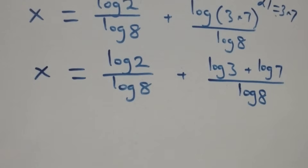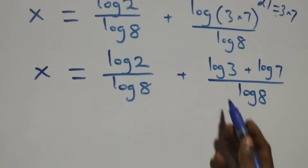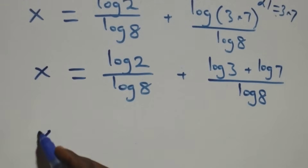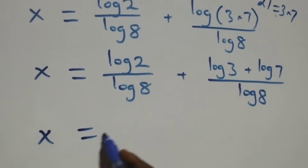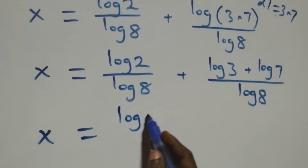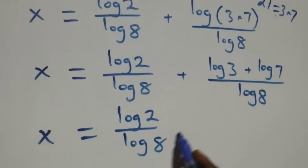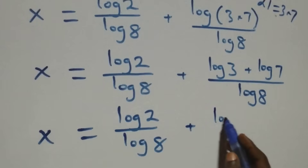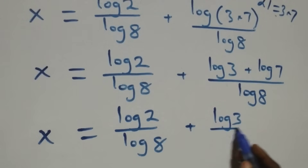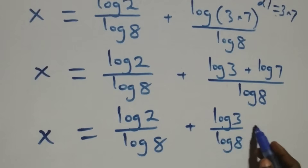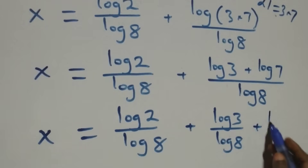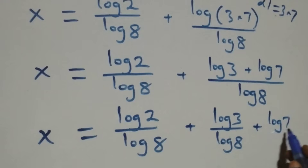The next step: we separate this into three fractions, giving x equals log 2 over log 8, plus log 3 over log 8, plus log 7 over log 8.